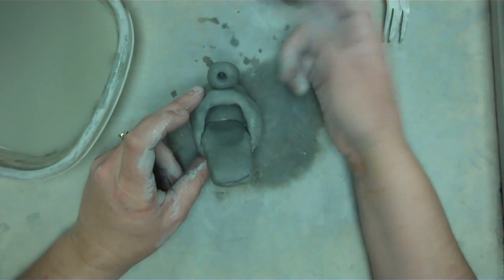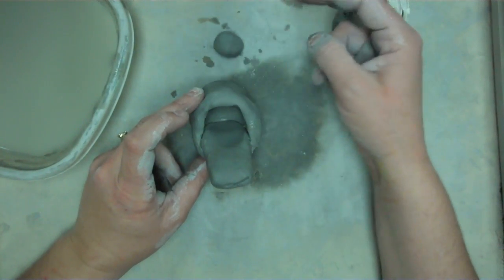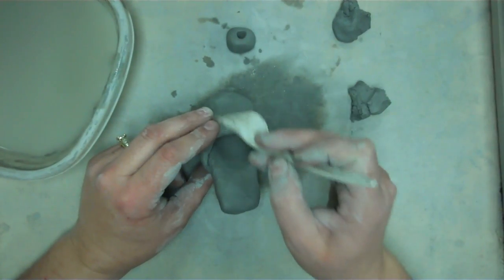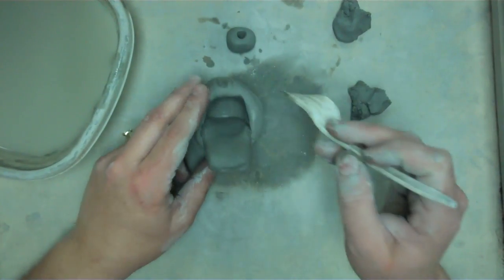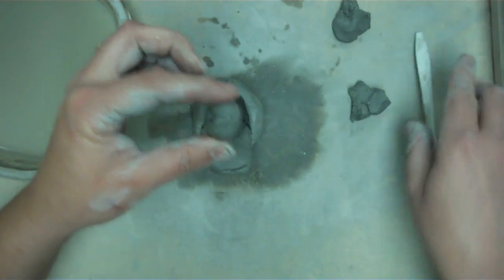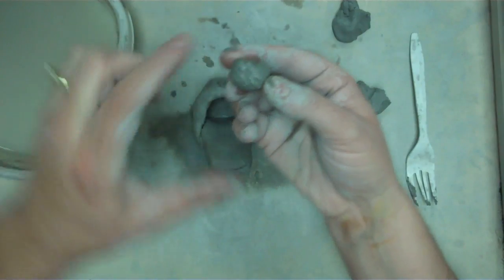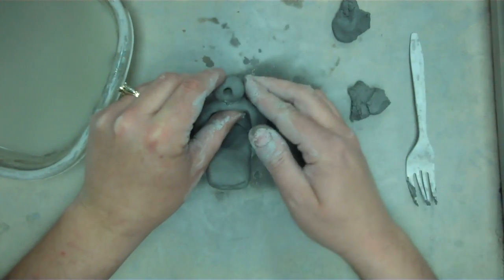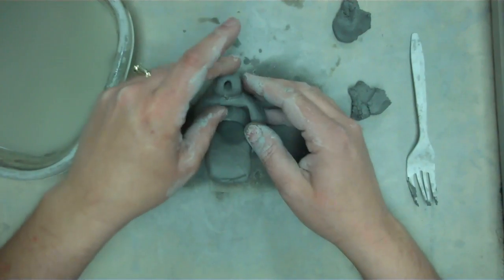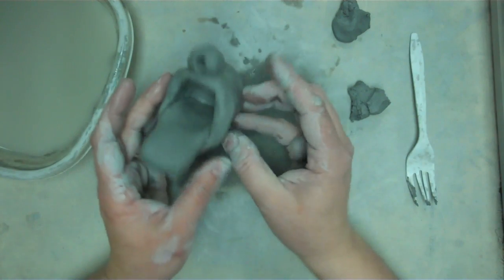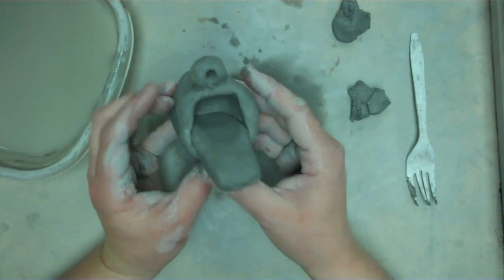Now again, I can't just lay it on top because when it dries it's going to fall off. So I'm going to take my fork again and make that scratch right where it's going to go. I'm going to scratch the bottom of the eye. I'm going to add some slip, and I'm going to press the two pieces of clay together. Oh, it's looking so good. Got the eye and the tongue and the mouth.